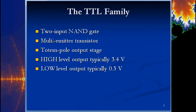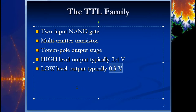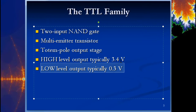TTL uses a multi-emitter transistor totem pole output stage — that's something I'll likely ask you about. The typical high output is only 3.4 volts, not up at five. The typical low output is 0.3 volts. For the low level output, the maximum is 0.8 volts, and for the high level there's a minimum value that's considered high. Watch the terminology: a high level has a minimum and a low level has a maximum.